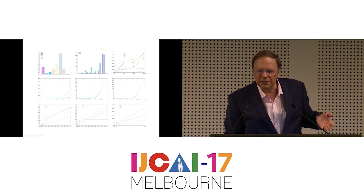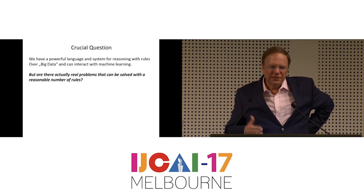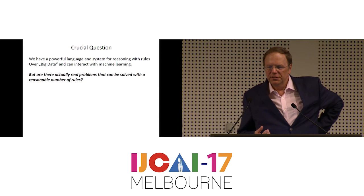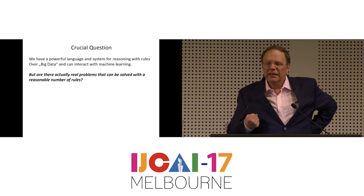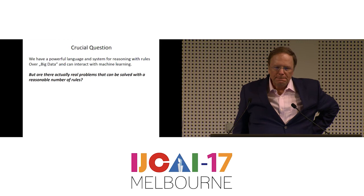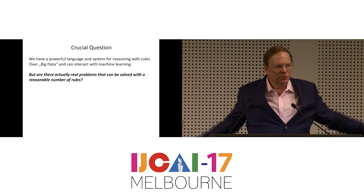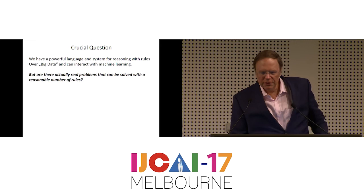Now there's a crucial question: we have a powerful language and system for reasoning with rules over big data, and we can interact with machine learning — but are there actually real problems that can be solved with a reasonable number of rules using machine learning? Yes — there are many real problems we are currently working on: fraud detection, credit worthiness as we've seen, security companies detecting critical events over the web.